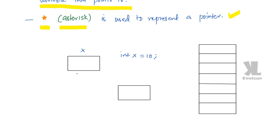Variable x will be having a memory location. Suppose that memory location is 2000. Now we are assigning a value 10 — it is an integer value 10. So we assign memory location 2000 for variable x, and it will be assigned with a value of 10.